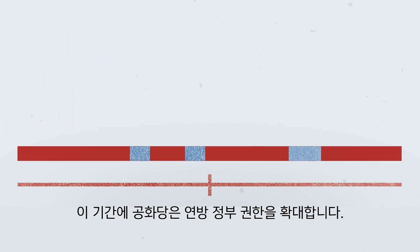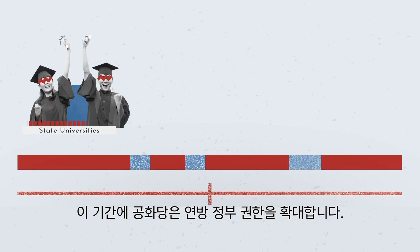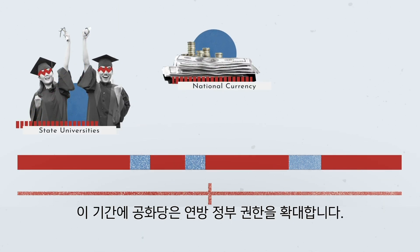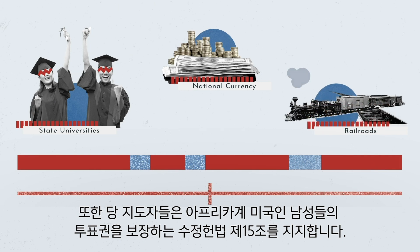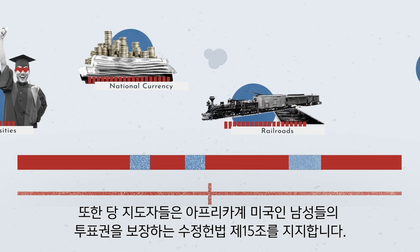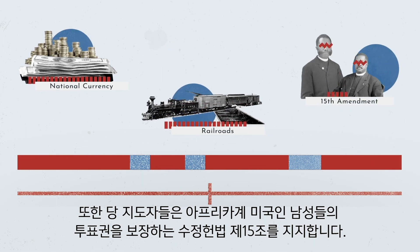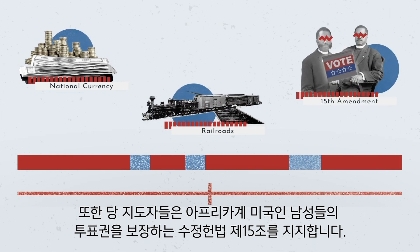During this time, the party champions an expansion of federal power. Party leaders also back the 15th Amendment, guaranteeing the vote for African American men.